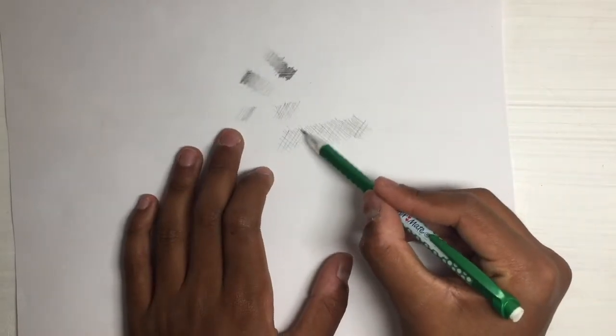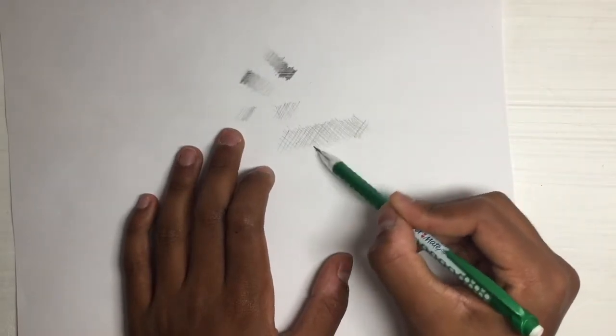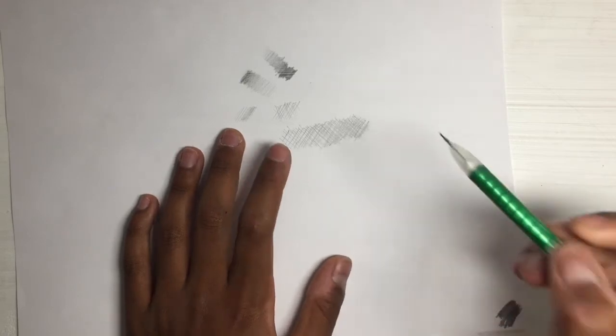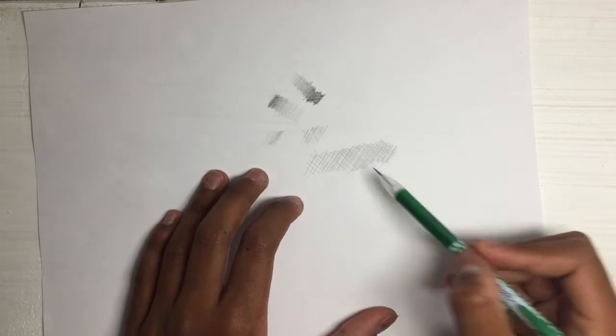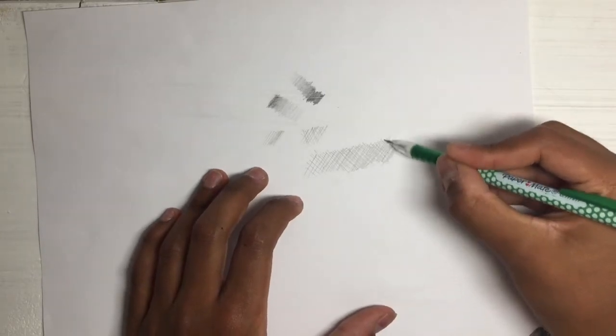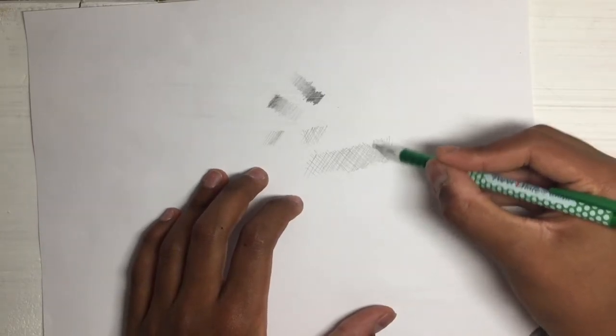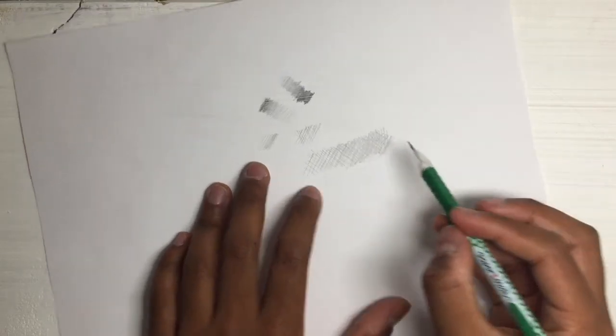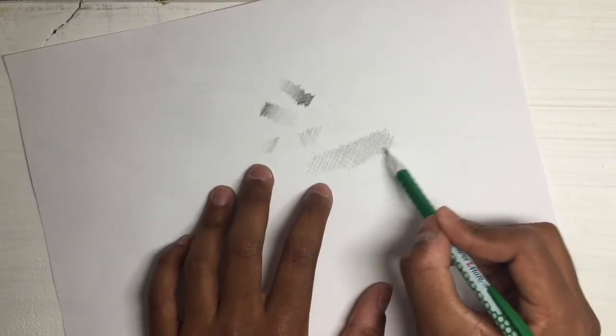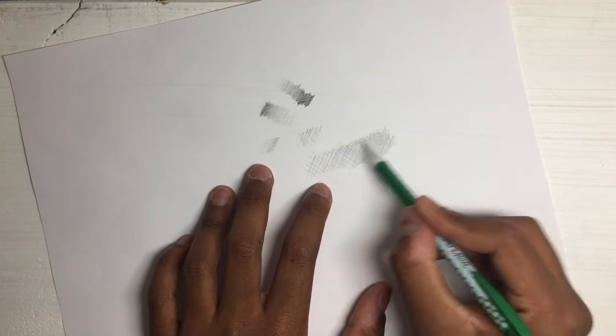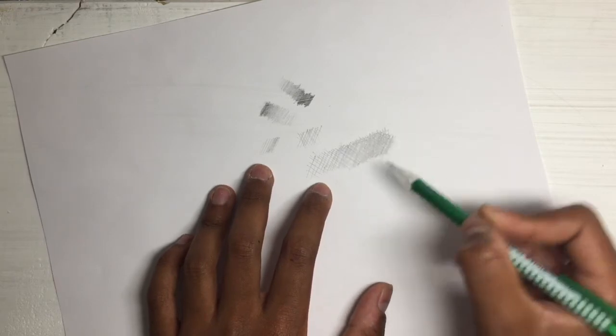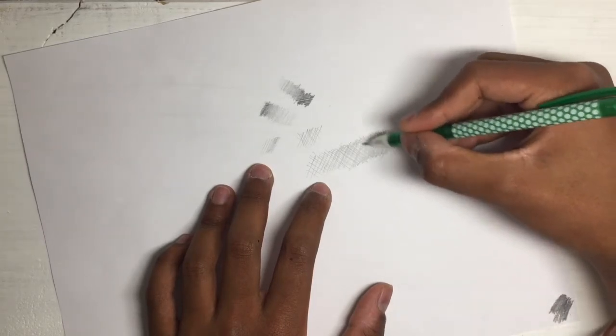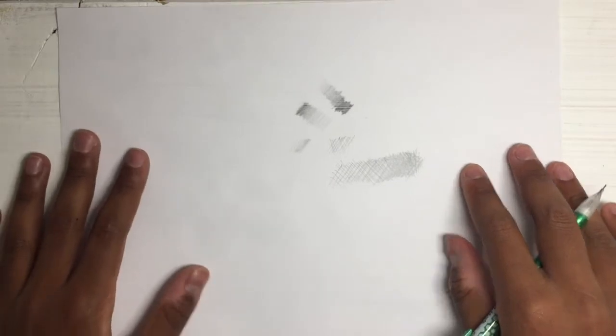We can add more lines like this and to make it even darker on this side we can even go straight lines like this.